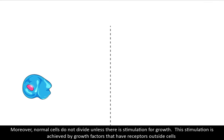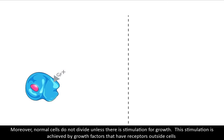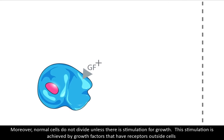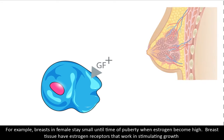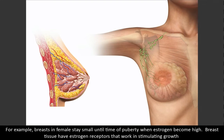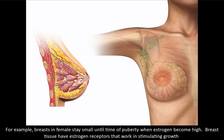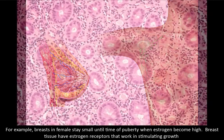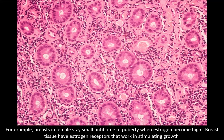Normal cells do not divide unless there is stimulation for growth. This stimulation is achieved by growth factors that have receptors outside cells. For example, breasts in females stay small until puberty, when estrogen becomes high. Breast tissue has estrogen receptors that work in stimulating growth.